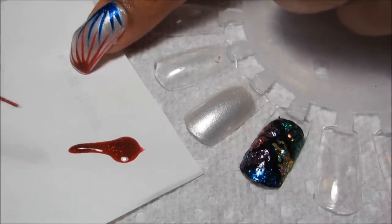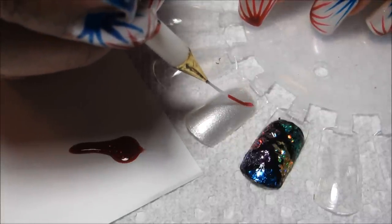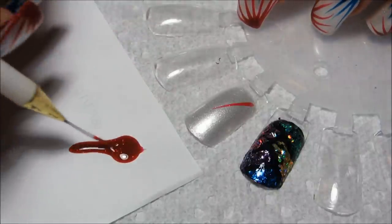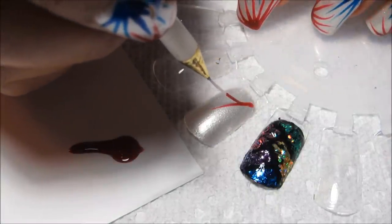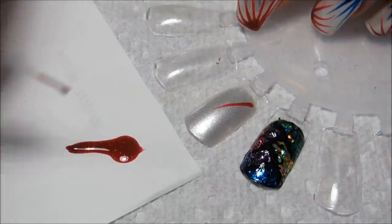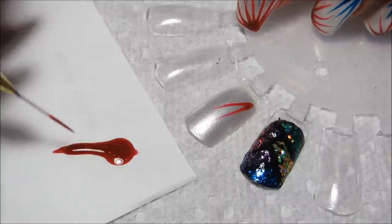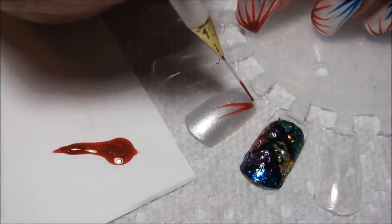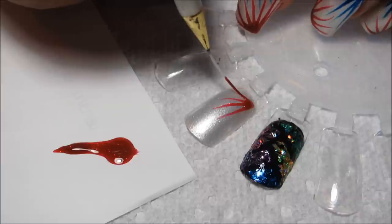So I'm just going to get some of this red onto my striper and I'm just going to start from what would be the corner of the nail and draw out. And really all you have to be able to do for this design is draw a fairly straight line. Even if it's not completely straight that's okay and continue out from that same point in the corner.